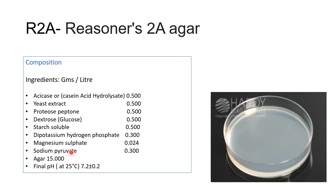Magnesium sulfate is a source of divalent cations and phosphates, and dipotassium hydrogen phosphate is used to balance the pH of the medium. The number of colonies on the plate are reported as CFU per mL of the volume inoculated, or it can be CFU per microliter depending on the volume inoculated. That covers R2A agar.